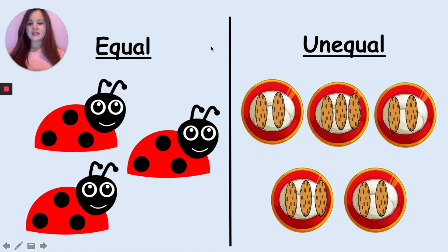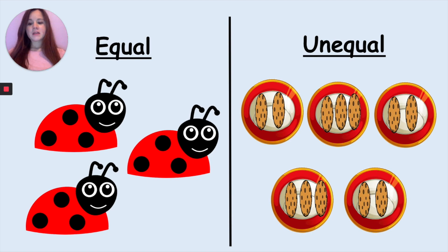Well done for counting in twos, fives and tens. So we're just going to recap what the words equal and unequal mean. Equal means the same. We have the same amount of spots on each ladybird: 1, 2, 3 — 1, 2, 3 — 1, 2, 3. And unequal means different.